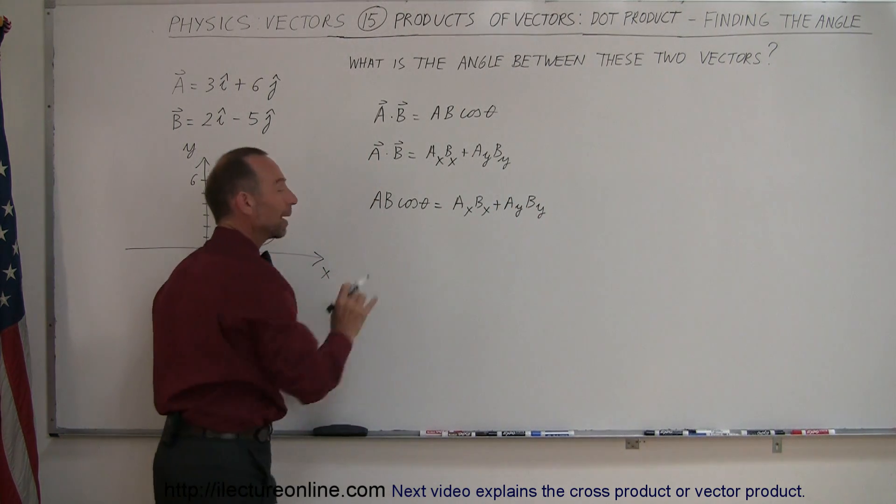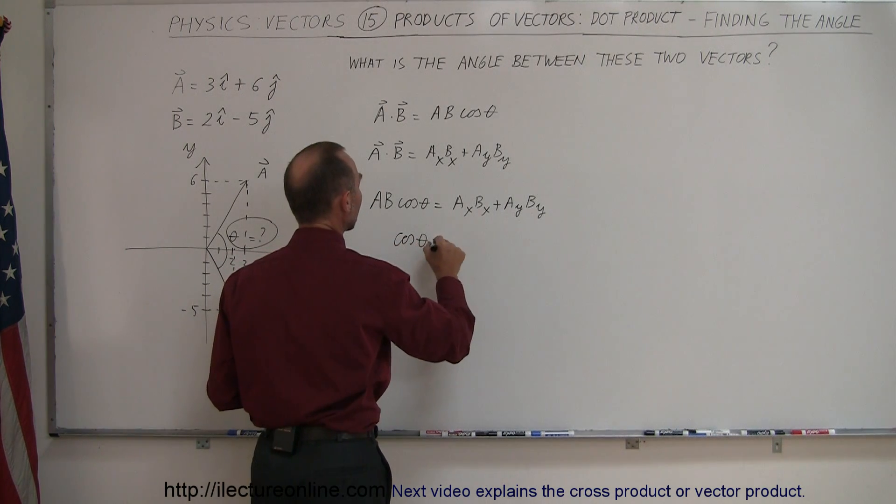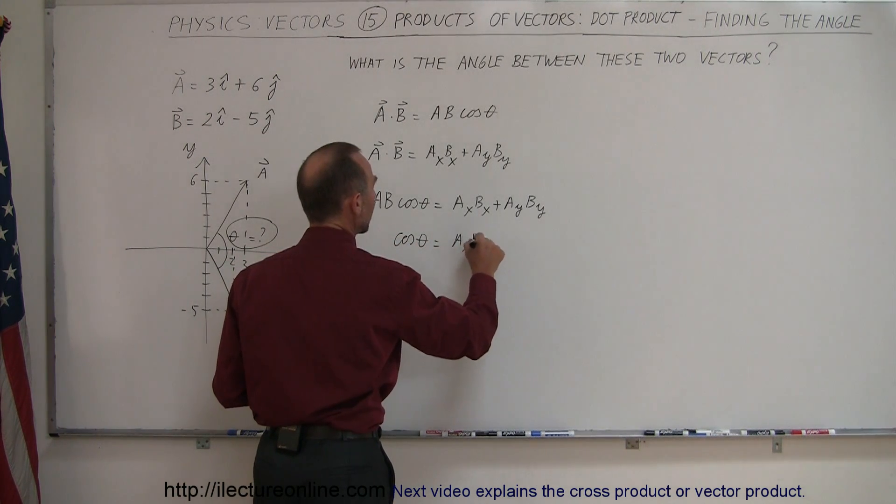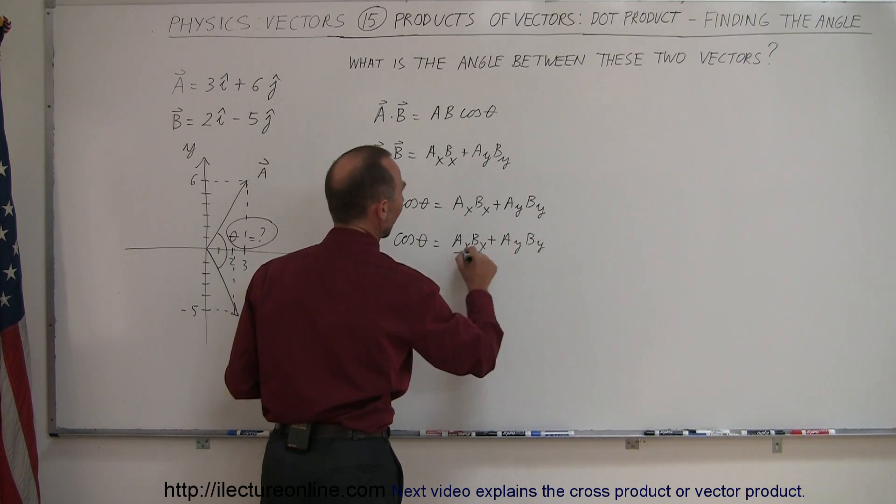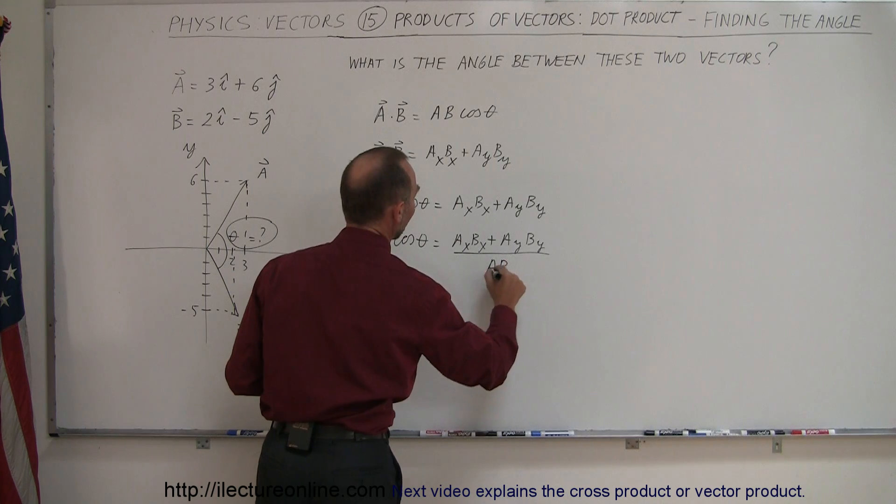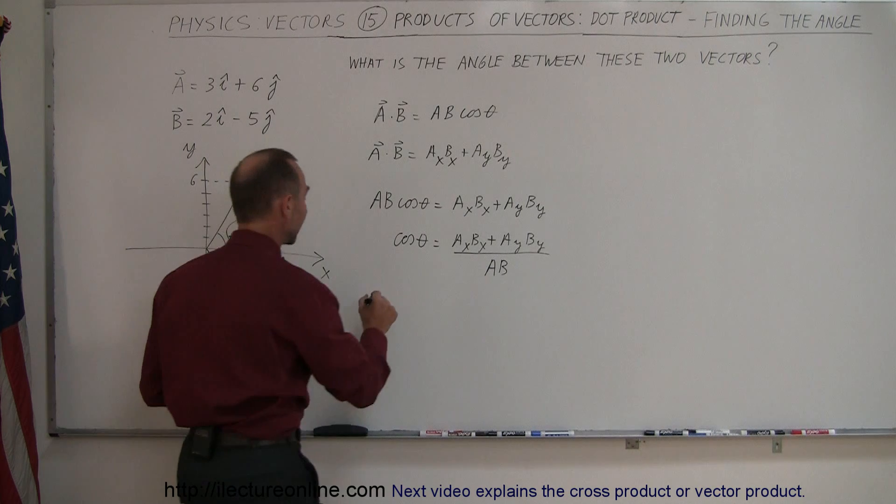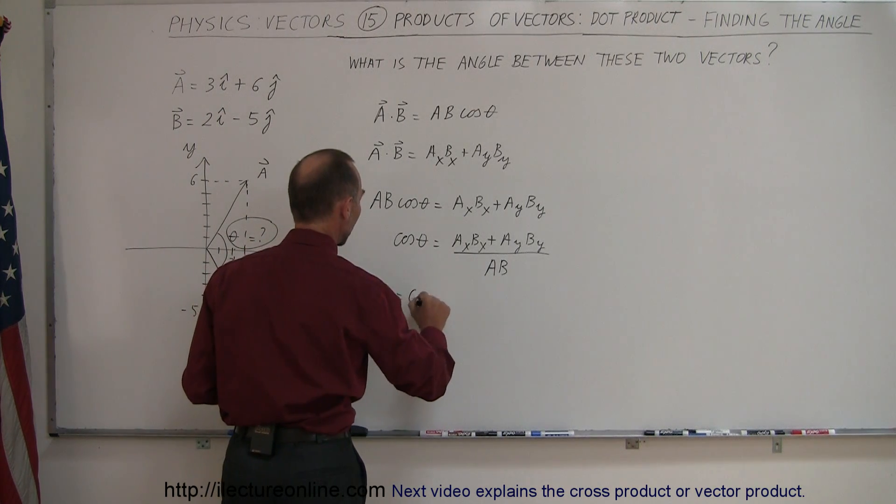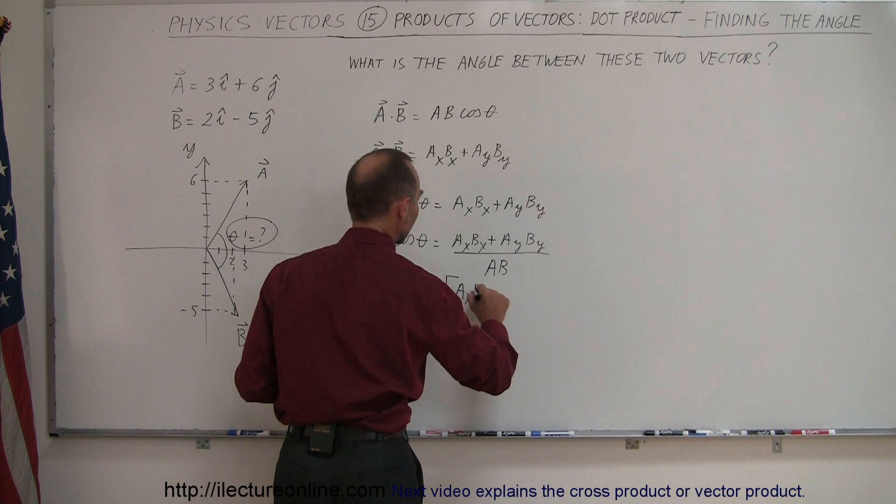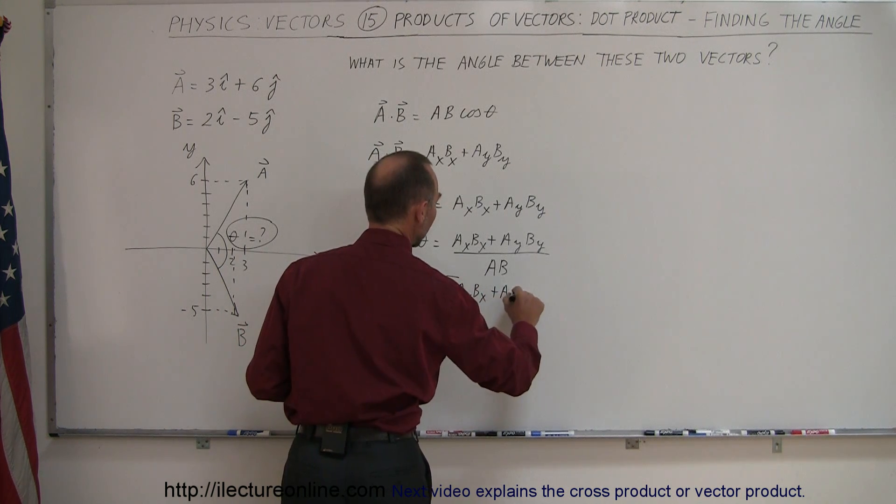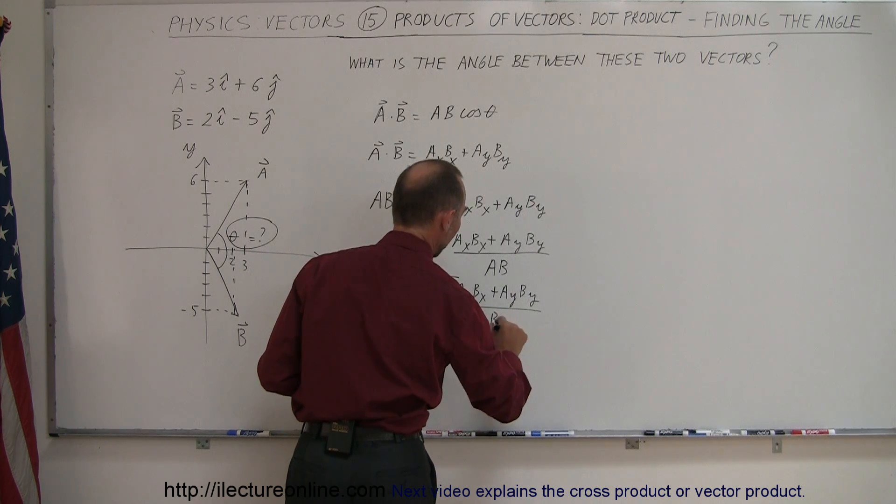And if I divide both sides by the magnitude of A times B, I get the cosine of theta is equal to AX BX plus AY BY over AB. And then if I take the cosine, I can say that theta therefore is equal to the arc cosine of AX BX plus AY BY divided by the magnitude of A times the magnitude of B.